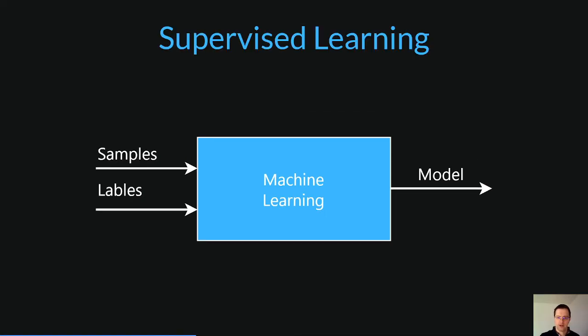One type of ML is called supervised learning. Supervised learning is defined by using labeled data sets to train algorithms that classify data or predict outcomes as accurately as possible. As the input data is fed into the model, it adjusts its weights until the model is appropriately adjusted.